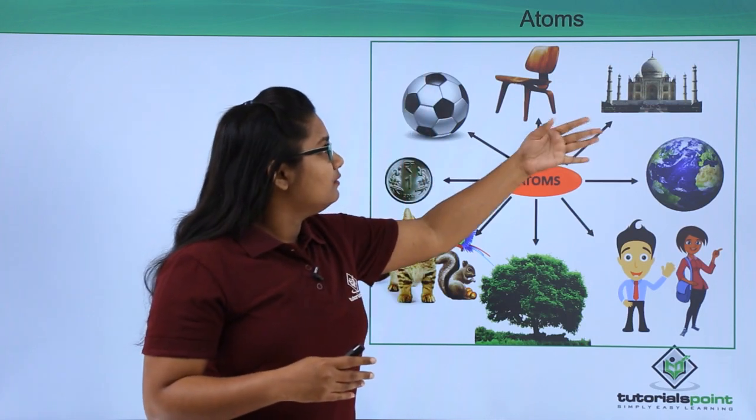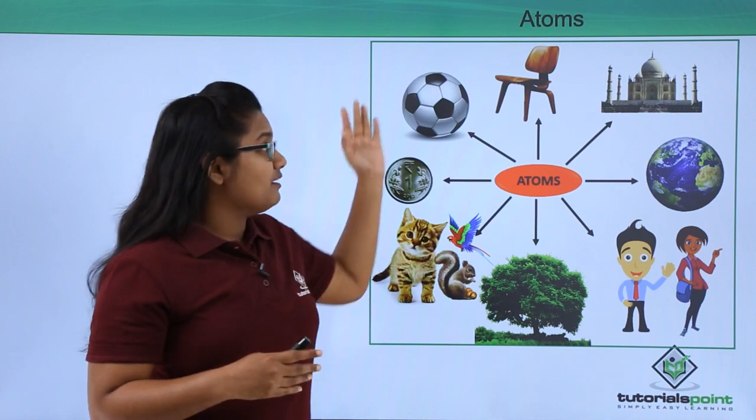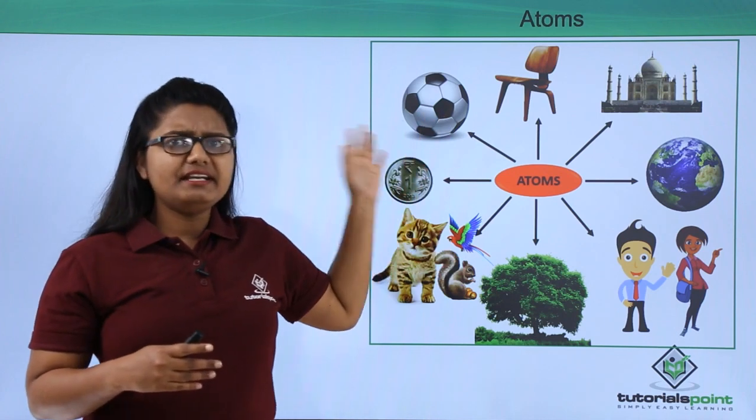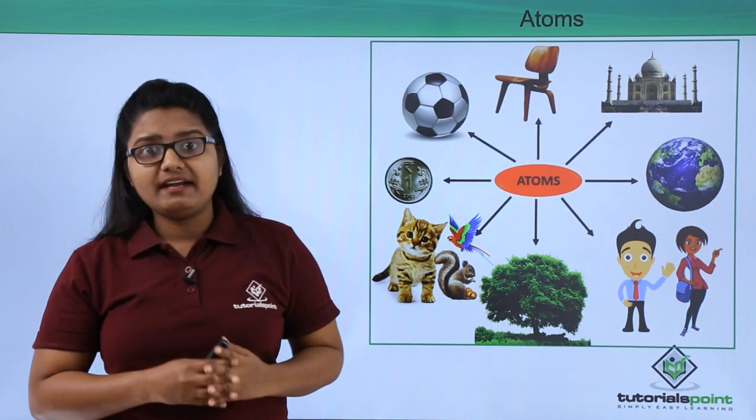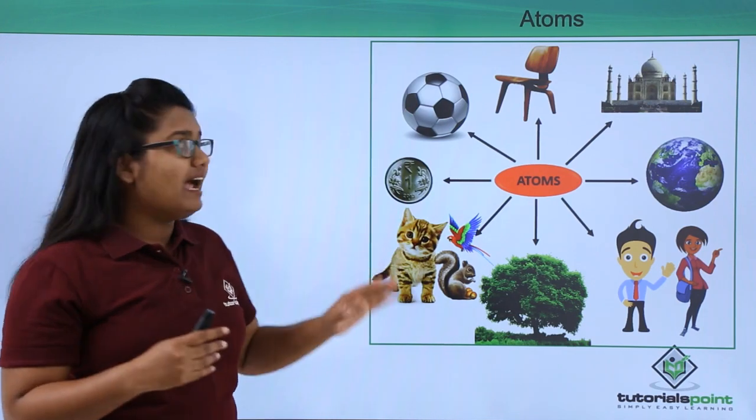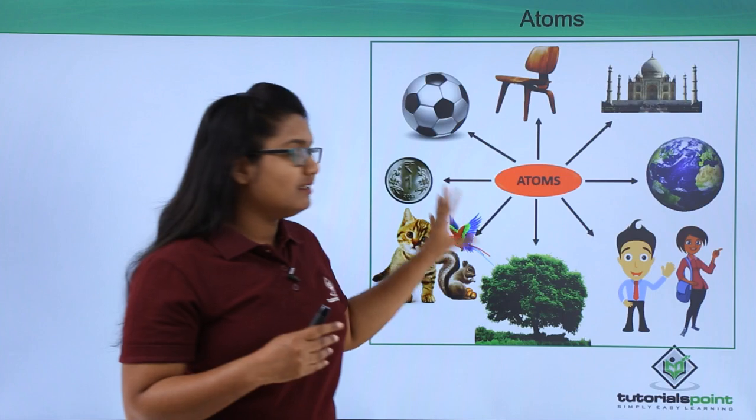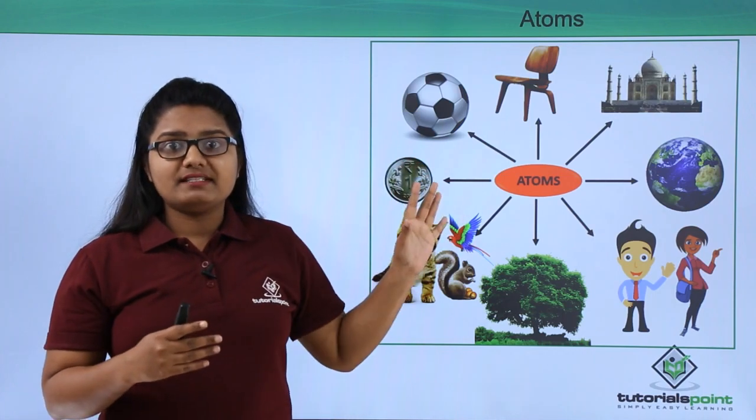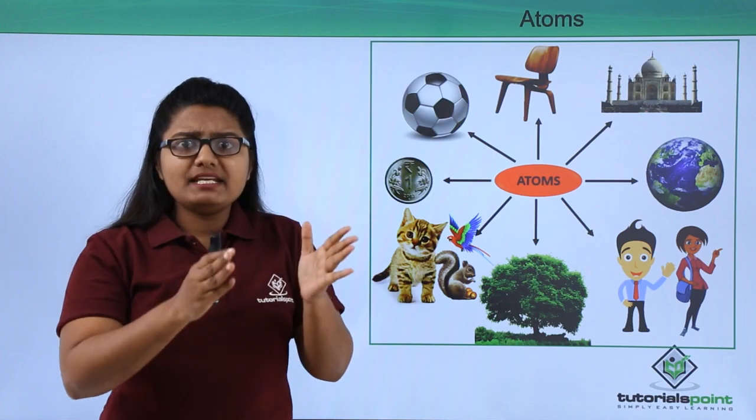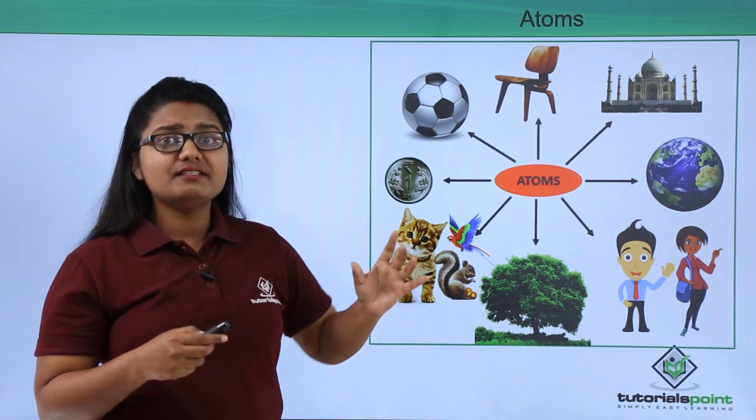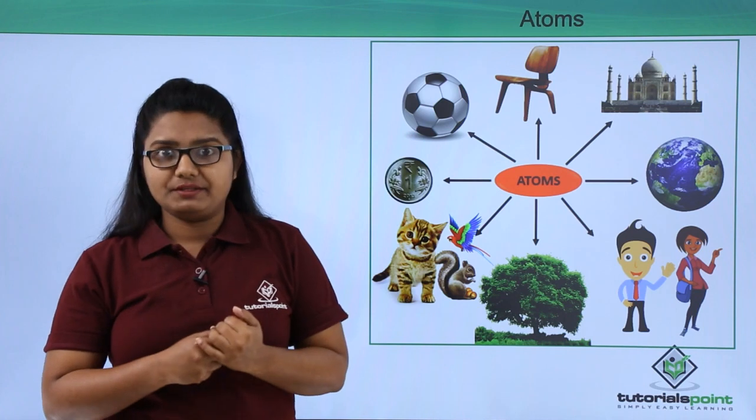A bunch of items that I have listed look very different from each other, right? But just now I said everything is made up of atoms. The reason behind their different looks is that these objects are either made up of different kinds of atoms or combinations of different atoms, and that's why they look different from each other.